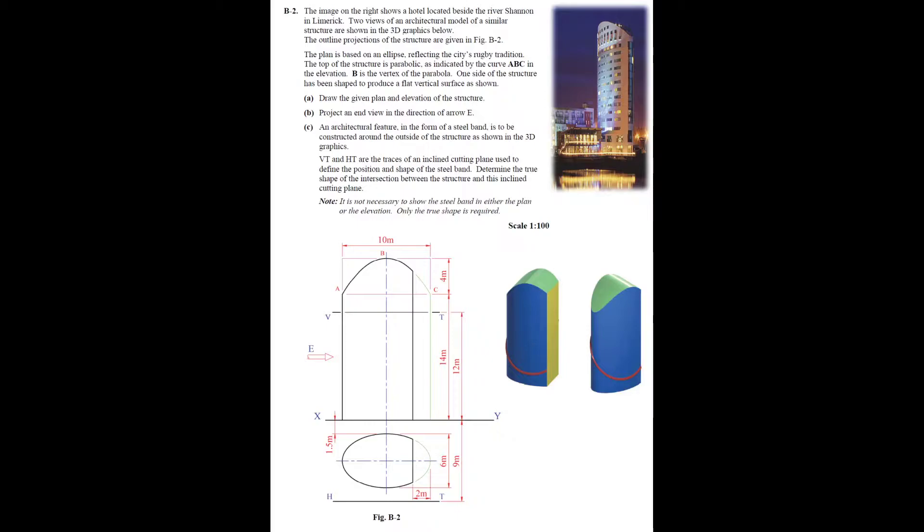Part A of this question is to draw the given plan and elevation of the structure. Part B is projecting end view in the direction of arrow E. Part C: an architectural feature in the form of a steel band is to be constructed around the outside of the structure as shown in the 3D graphics. VT and HT are the traces of an inclined cutting plane used to define the position and shape of the steel band, determining the true shape of the intersection between the structure and this inclined cutting plane.